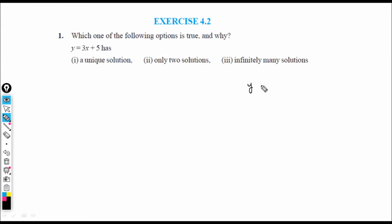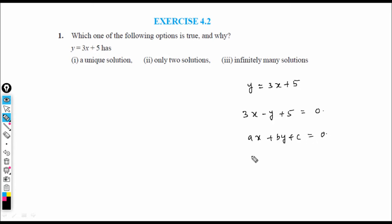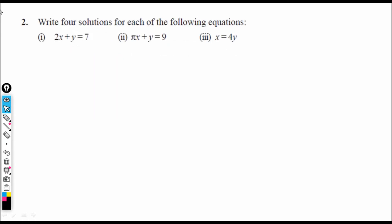We have the equation y = 3x + 5, which gives 3x − y + 5 = 0. This is a linear equation in two variables of the form ax + by + c = 0. Any linear equation in two variables has infinitely many solutions. Let us write four solutions.